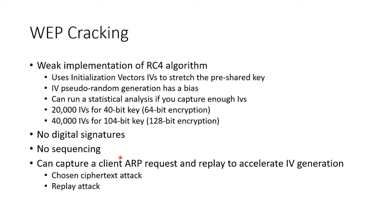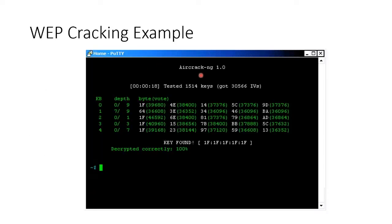We take an ARP packet — ARPs are easy to identify even when encrypted because they have a very specific look. We capture one, replay it at high speed, the WEP access point responds at high speed, and we capture enough key material to run a statistical attack. So WEP cracking is definitely vulnerable to replay attacks. Here's an example of using AircrackNG, running a statistical analysis on captured data until it finds and decrypts the key.